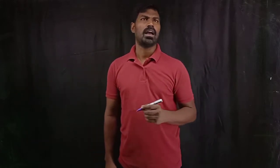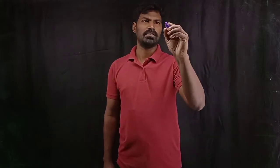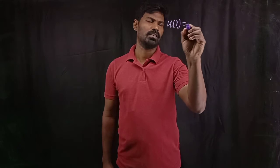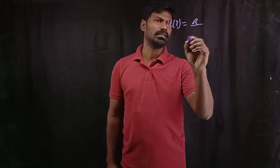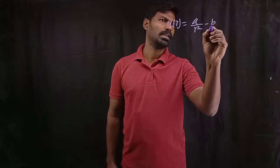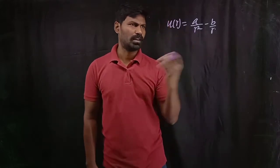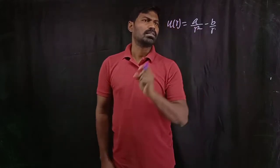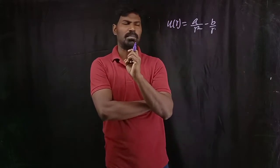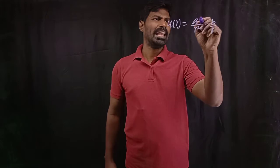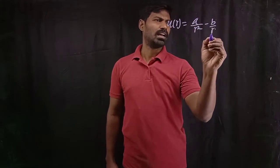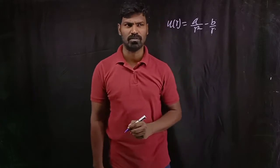Hello everyone. In this lecture I'm going to make an analysis of stability for a given potential energy curve. For that purpose I am taking an arbitrary potential energy function U as a function of R, given by A divided by R squared minus B divided by R. This is an arbitrary potential energy expression. I'm assuming A and B are constants and R is the distance of the point from the center of the force.